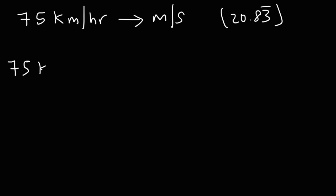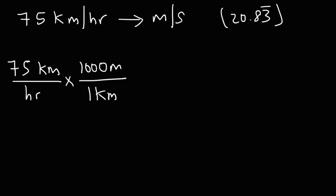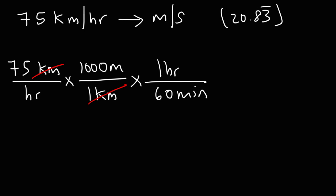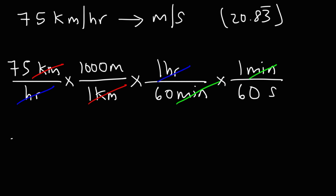Now let's show the work. Start with 75 kilometers per hour and begin by converting kilometers into meters — one kilometer equals 1,000 meters, so we cancel the unit kilometers. Next, convert hours into minutes: one hour is 60 minutes, so we cross out the unit hours. Then convert minutes into seconds: one minute is 60 seconds. So it's 75 times 1,000 divided by 60 and divided by 60 again, giving 20.83 meters per second.